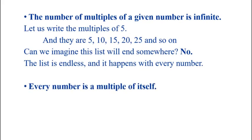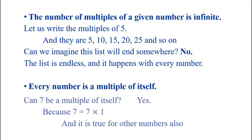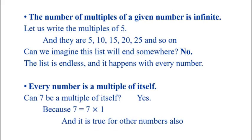Every number is a multiple of itself. Can 7 be a multiple of itself? Yes, because 7 = 7×1, and it is true for other numbers also. Every number is a multiple of itself — you can take 5, 100, 250, and so on.